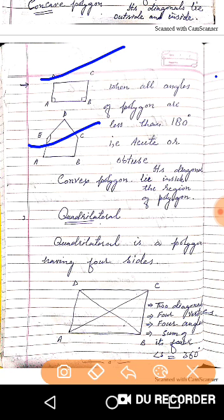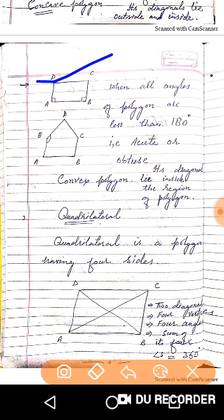None of the angles is greater than 180 degrees. So in a Polygon, when all the angles are less than 180 degrees — that is, they are either acute, right, or obtuse angles, but none of them is greater than 180 degrees — such type of Polygon is called a Convex Polygon.